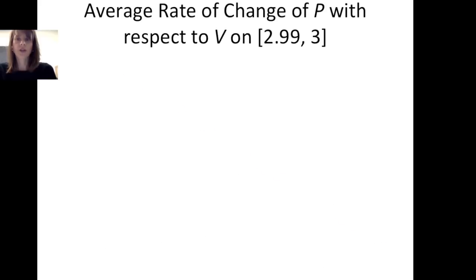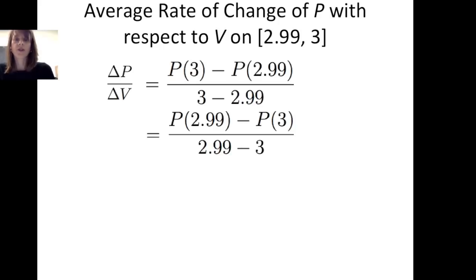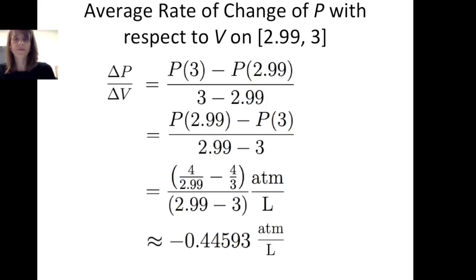We can also look at the average rate of change on a smaller interval — the closed interval from 2.99 to 3, which is on the other side of 3. Using the template: Δp / Δv = (p(3) − p(2.99)) / (3 − 2.99), equivalently written as (p(2.99) − p(3)) / (2.99 − 3). Substituting gives (4/2.99 − 4/3) / (2.99 − 3), with units of atmospheric pressure per liter. This calculates to approximately −0.44593 ATM per liter.